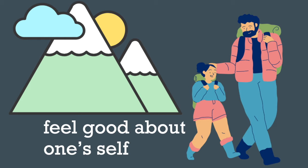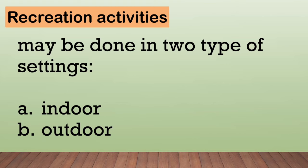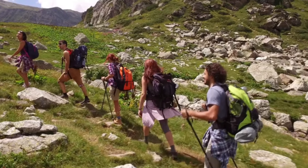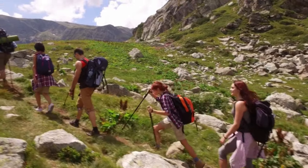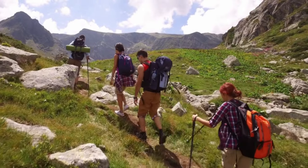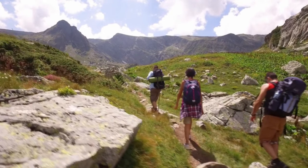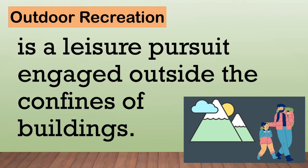Recreation may be done in two types of settings: indoor or outdoor. What can you say about activities done outdoors? You can write it on your paper. Outdoor recreation is a leisure pursuit engaged outside the confines of buildings — it must be done outside.